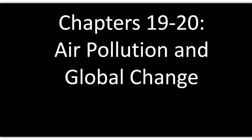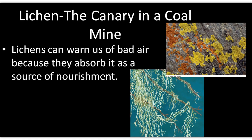This is chapter 19 and chapter 20 on air pollution and some global change, including the global warming category. The first thing mentioned in the book is about lichen and how they're like a canary in a coal mine — a first defense indicator of what's going on in an area. Lichen are stationary, staying in one place, and are highly susceptible to air pollution, acting like a little filter.